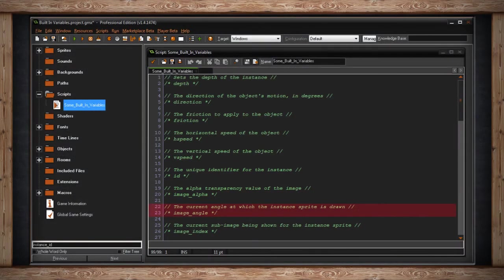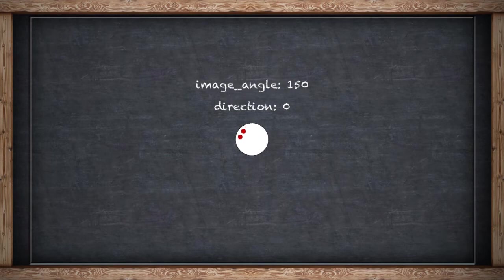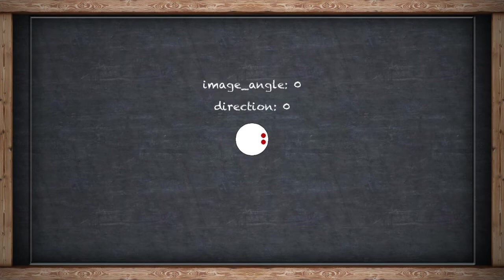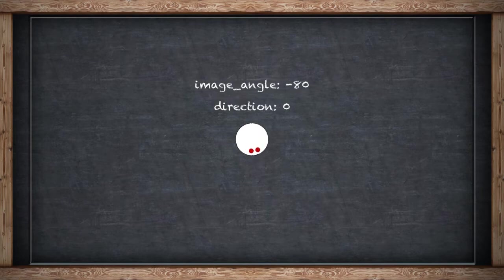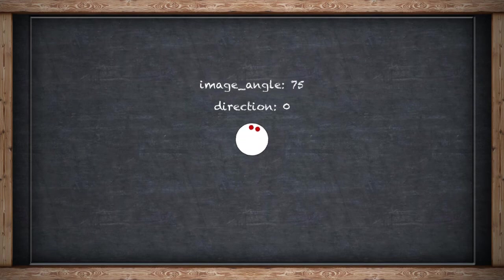Image angle is the current angle at which the instance sprite is drawn. Similar to direction, image angle uses degrees — the degree at which your sprite is drawn on your instance. An image angle of 0 is neutral, looking exactly as it did in your sprite resource folder. You can increase or decrease the angle to see your sprite rotate. This only rotates the actual image of the sprite, and will not affect the direction or angle of the actual instance — but you can combine them so your image rotates as your instance rotates.